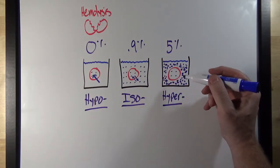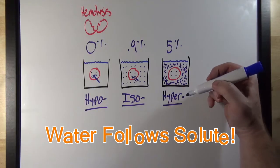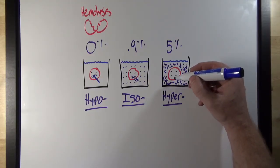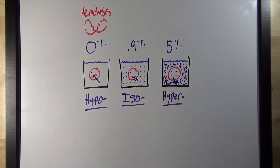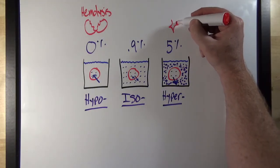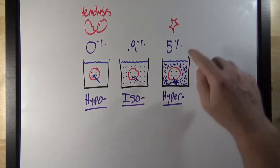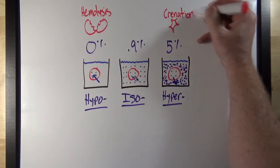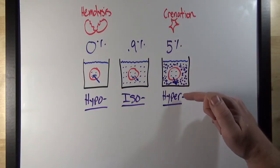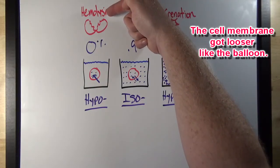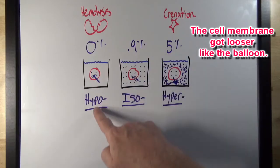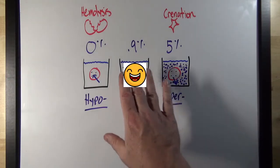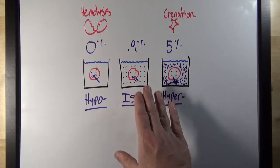In the hypertonic case, remember — water follows solute, and water is going to move toward the higher solute concentration. Here, the higher solute concentration is outside of the cell, so water is going to move out of the cell. When this happens, the cell is going to shrivel up and look spiky under a microscope. The term for this is crenation. So: crenation will happen when a red blood cell is placed in a hypertonic solution, hemolysis will happen when a red blood cell is placed in a hypotonic solution, and when placed in an isotonic solution, that red blood cell is going to be happy and able to carry out all of its normal physiological processes.